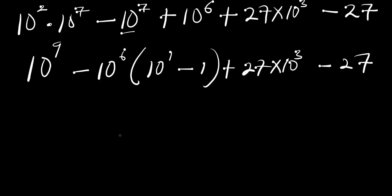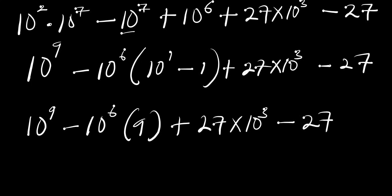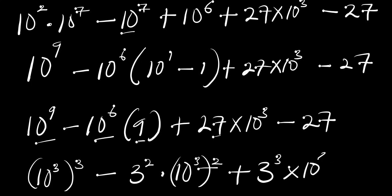So the next thing we are going to do: we have 10⁹, then minus 10⁶ times (10¹ minus 1), which is 9 — that is 9 times 10⁶. Then plus 27 times 10³ minus 27. Now 10⁹ = (10³)³, and 9 is 3², so minus 3² times (10³)², and 27 is 3³ times 10³, then minus 3³.